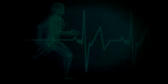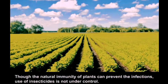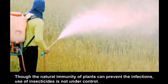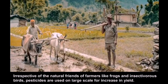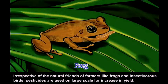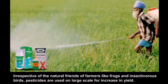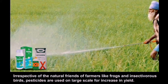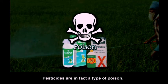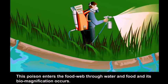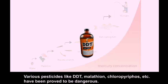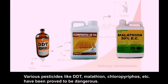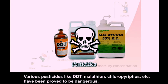Insecticides: through the natural immunity of plants, infections can be prevented, but use of insecticides is not always under control. Irrespective of natural predators of pests like frogs and insectivorous birds, pesticides are used on a large scale. Pesticides are a type of poison that enters food webs through water, food, and biomagnification. Various pesticides like DDT, Malathion, and Chlorpyrifos have been proven to be dangerous.